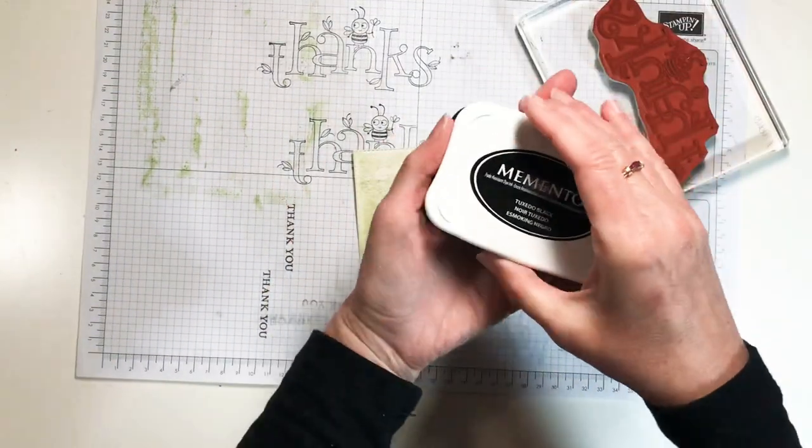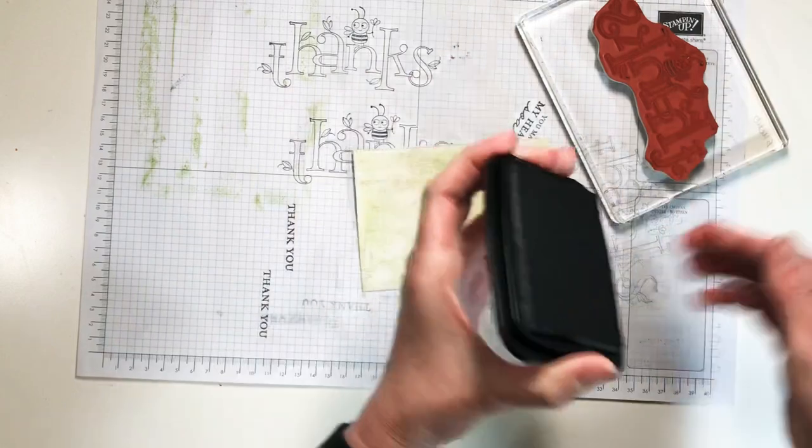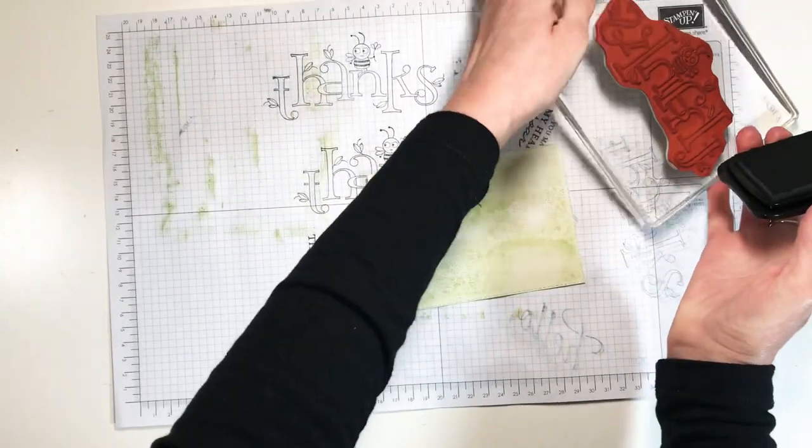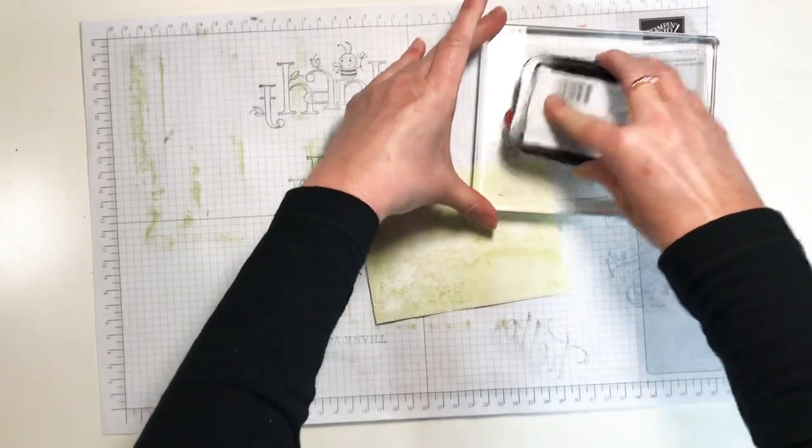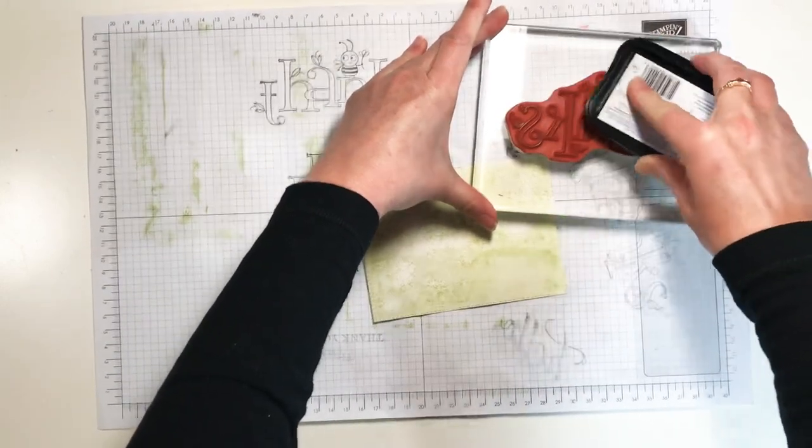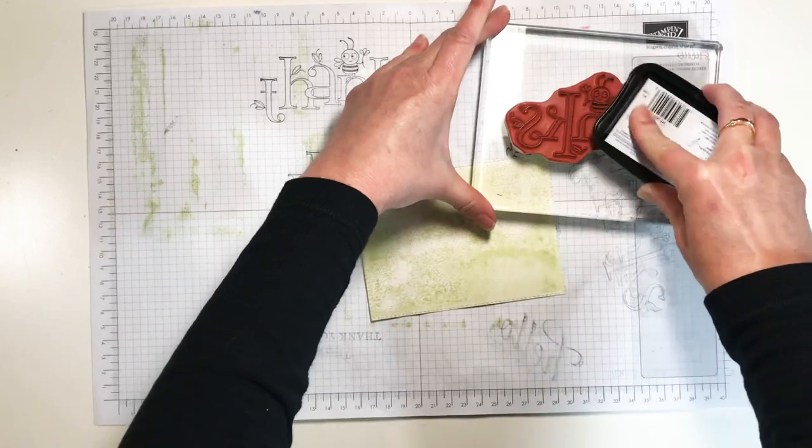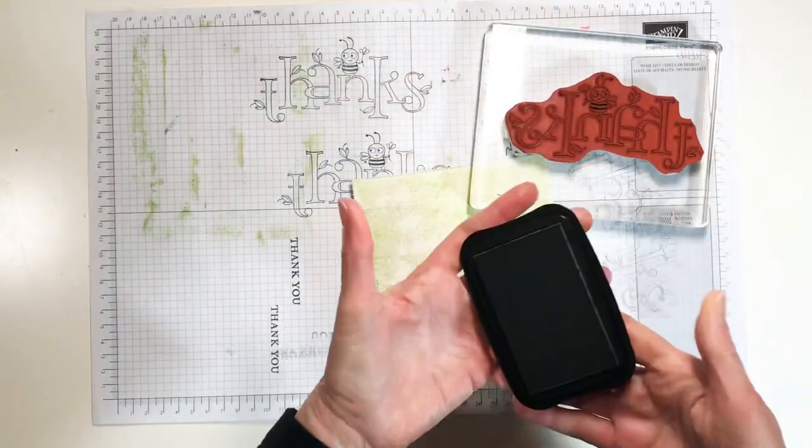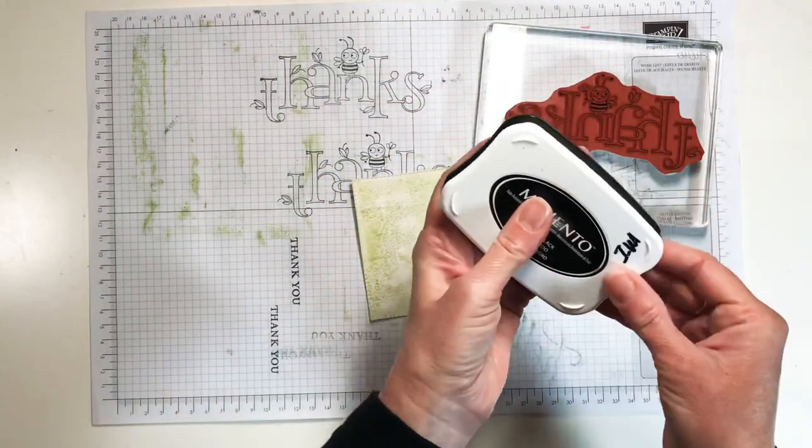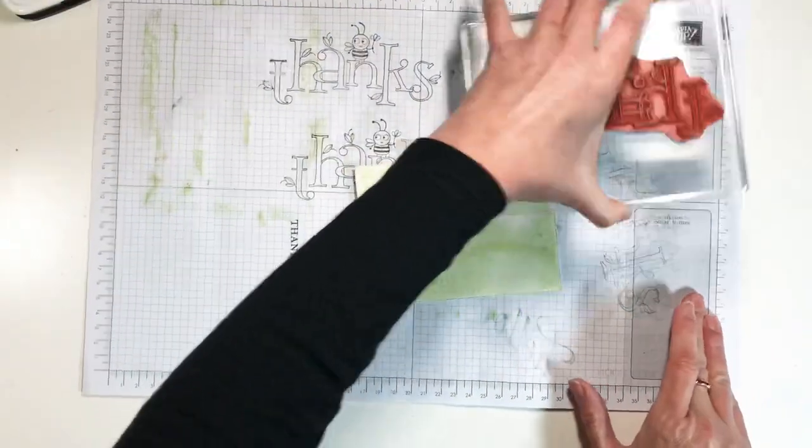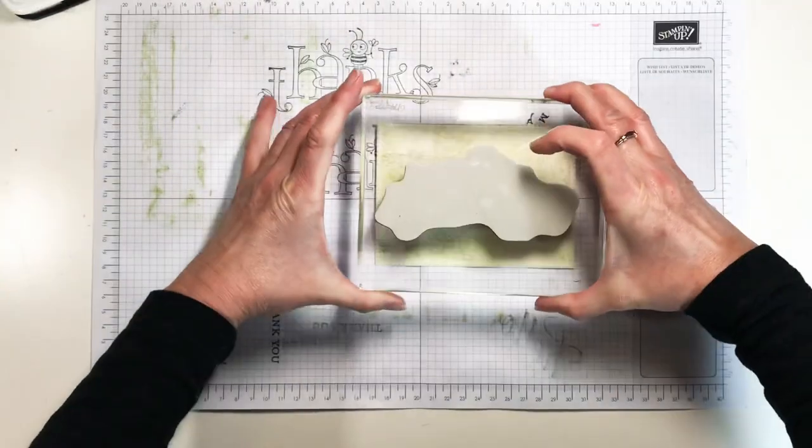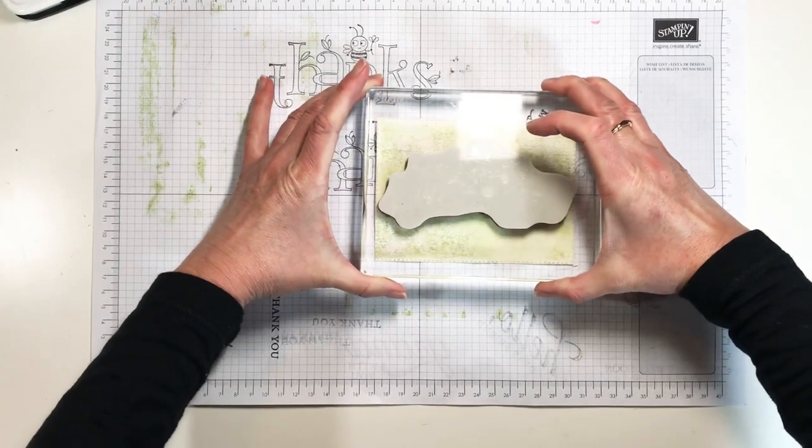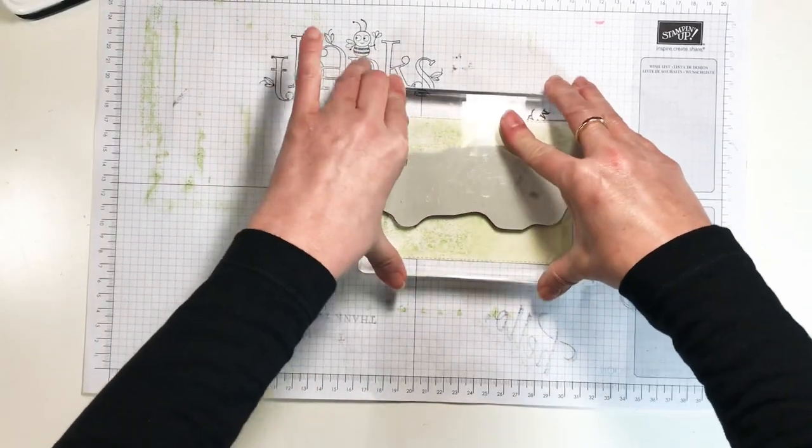Then using Tuxedo Black Memento ink I'm going to ink up this large stamp. I love this bee. My team is the stamping bee and so as soon as I saw this I thought oh I have to get this. This is just too fun. Then I'm going to put him on here.